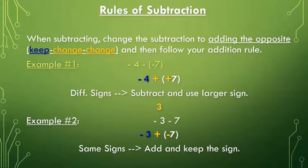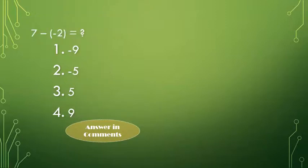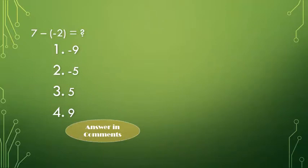Since the signs are the same, we add and keep the sign, so the answer is minus 10. Now for some more questions on subtraction of integers: which is equivalent to minus 12 minus minus 3? Using keep change change, we get minus 12 plus 3, which is the correct answer. Next, 7 minus minus 2 equals what? Using keep change change we get 7 plus 2, and since both signs are positive we add them to get positive 9, so the answer is positive 9.